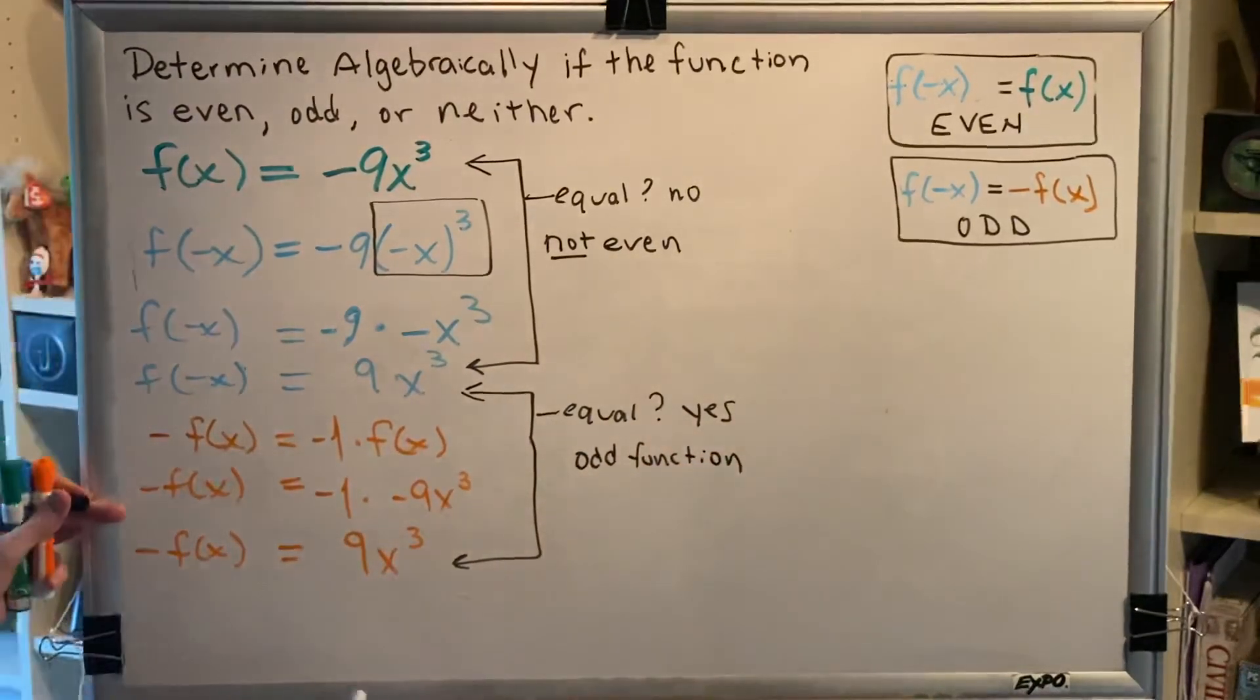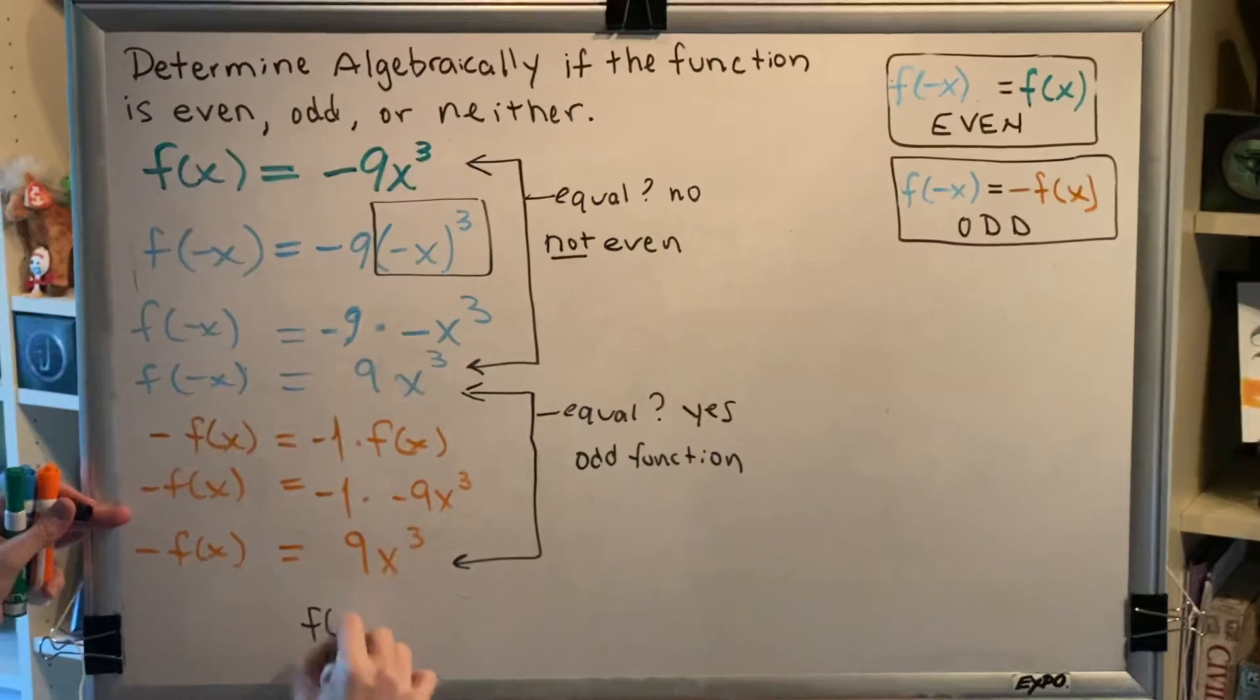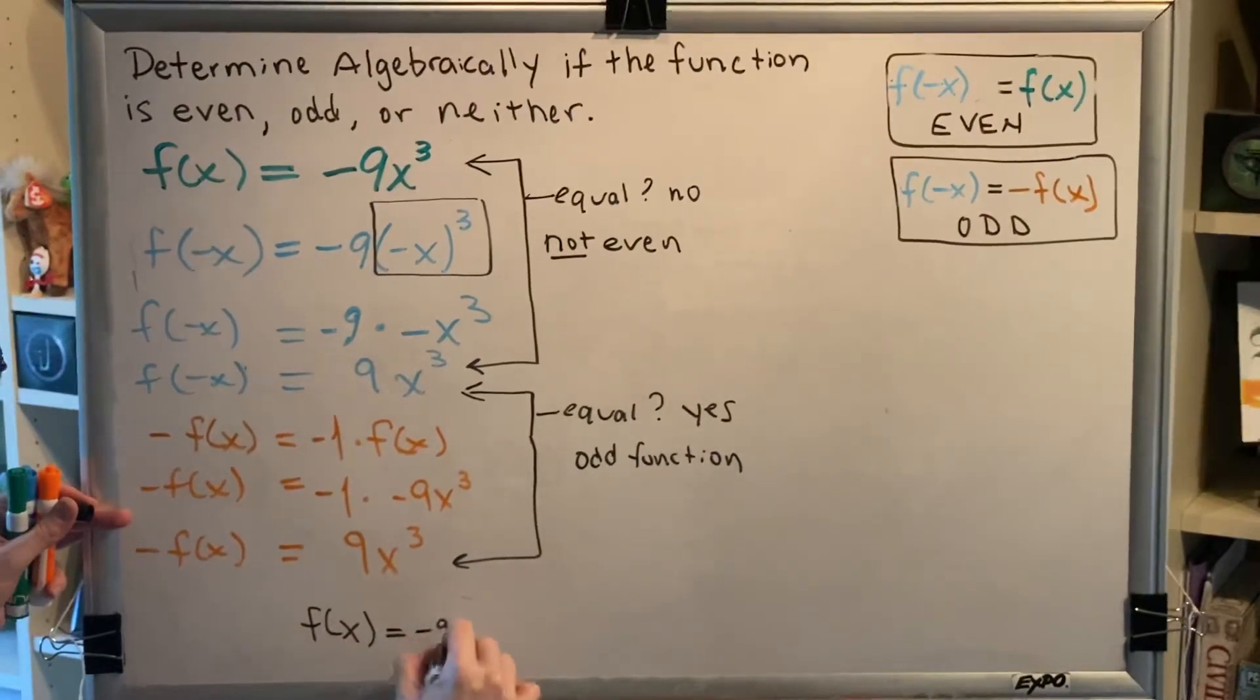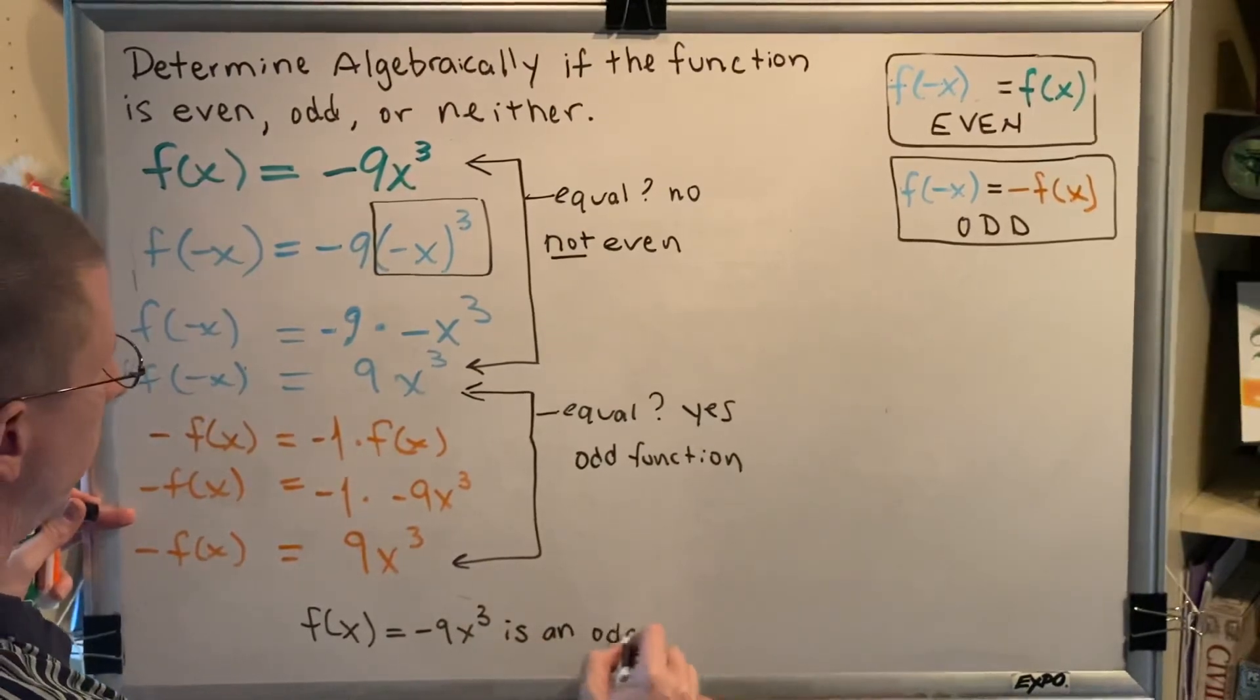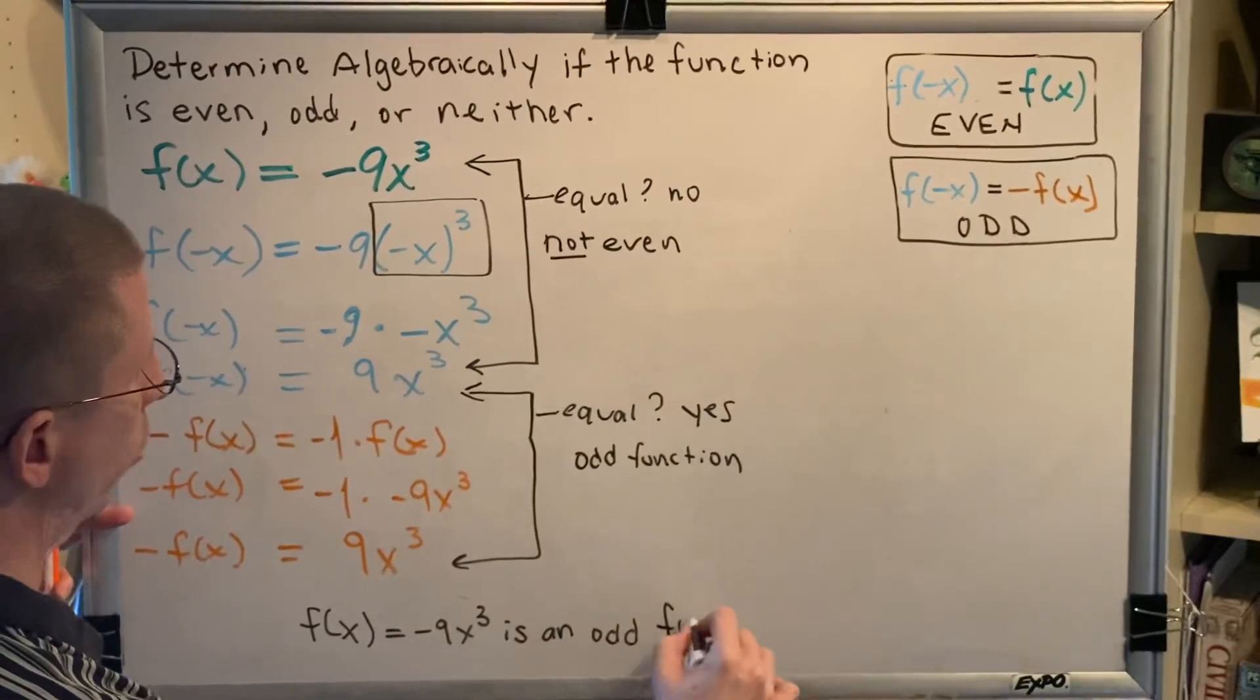So, we can state our conclusion. F of x equals negative 9x cubed is an odd function.